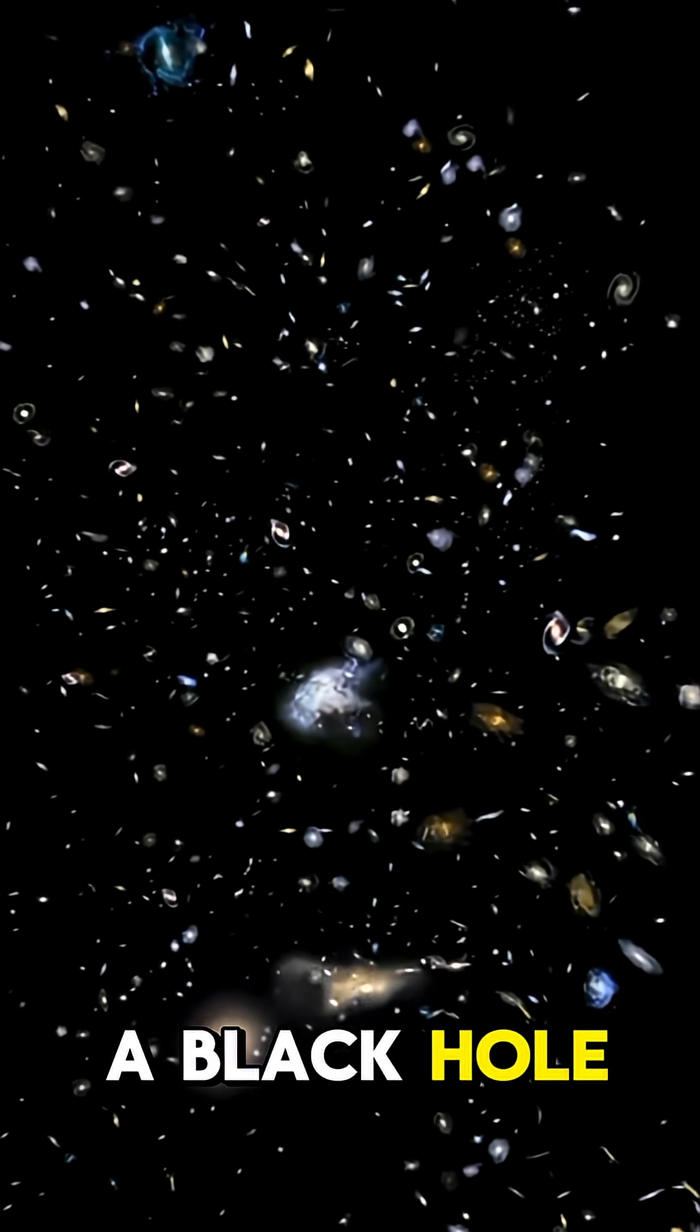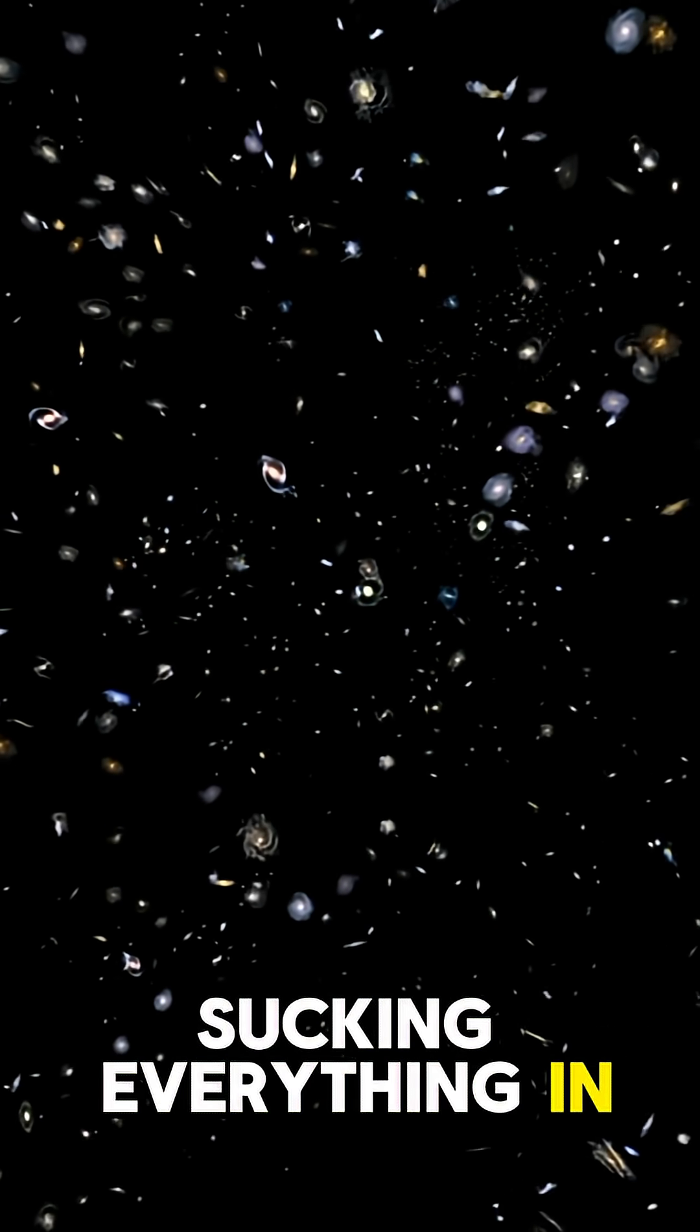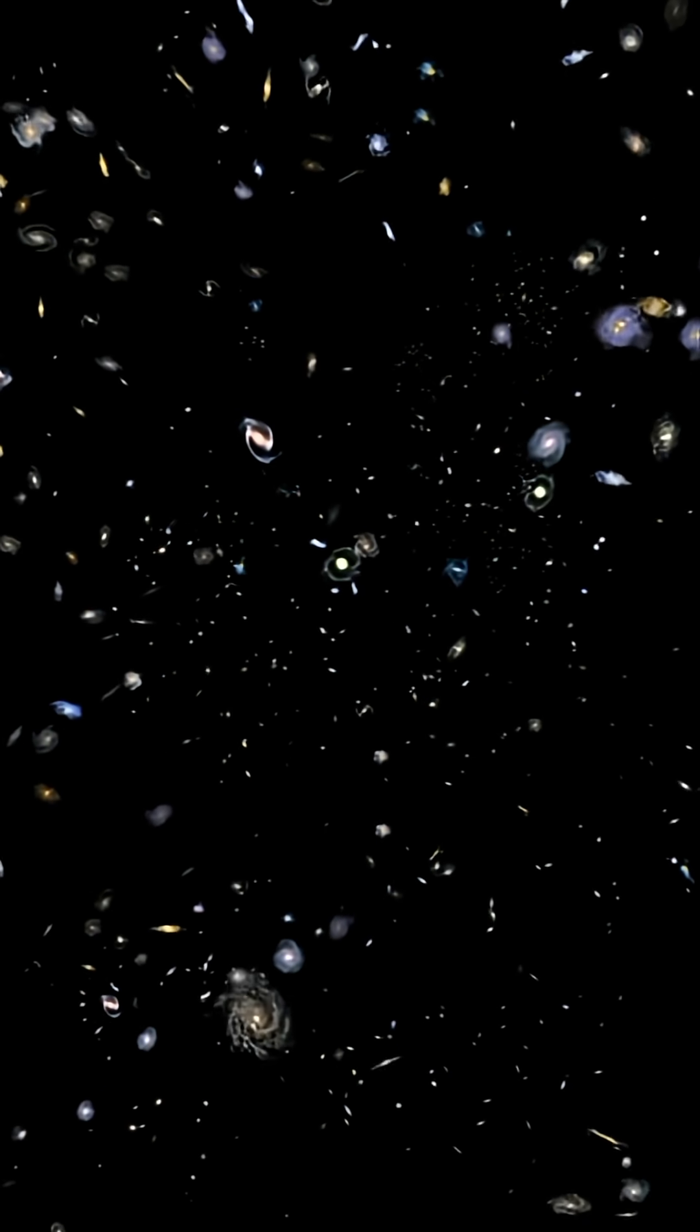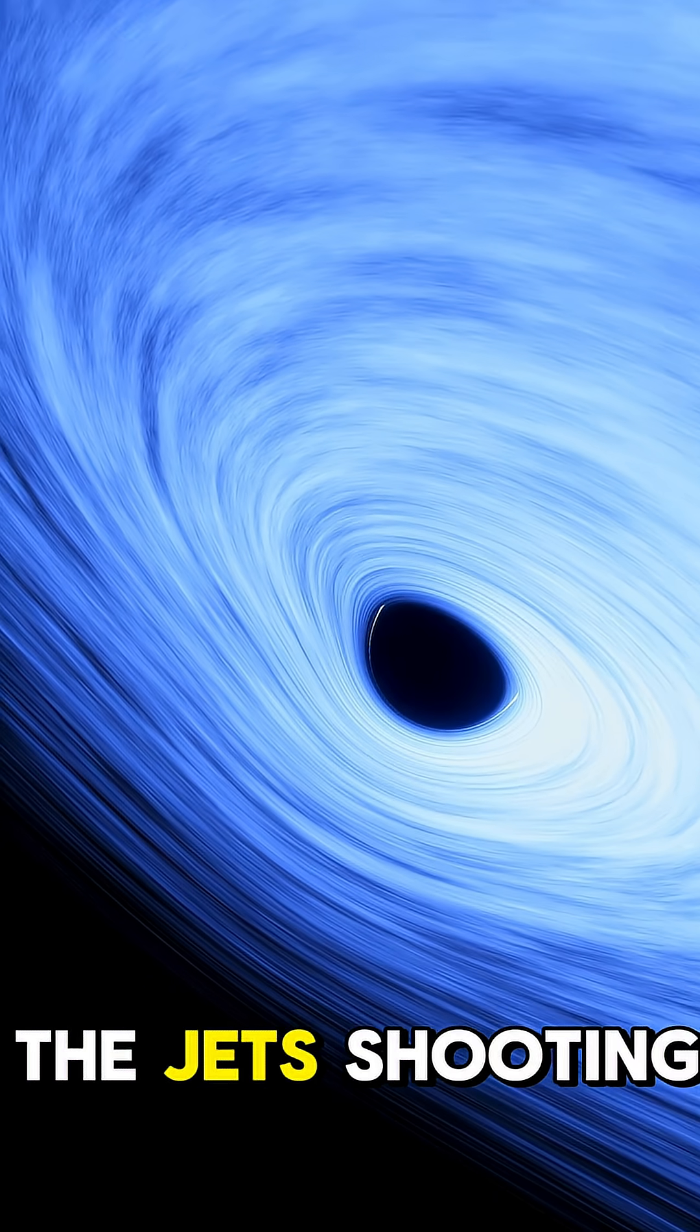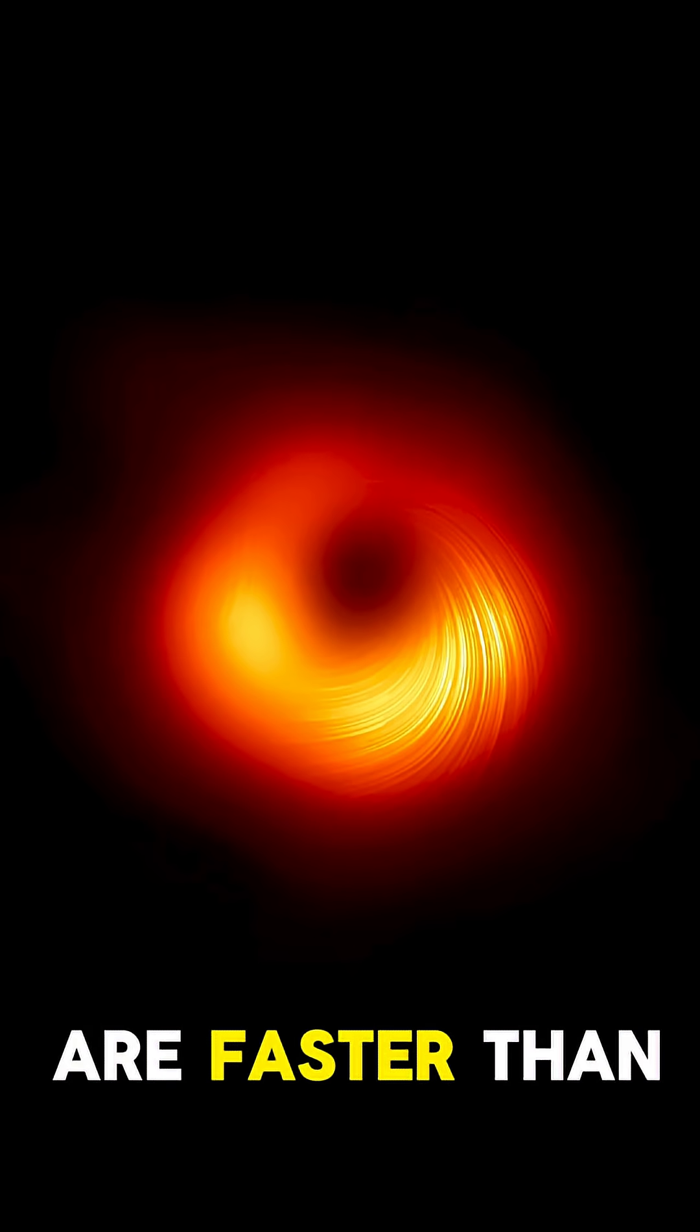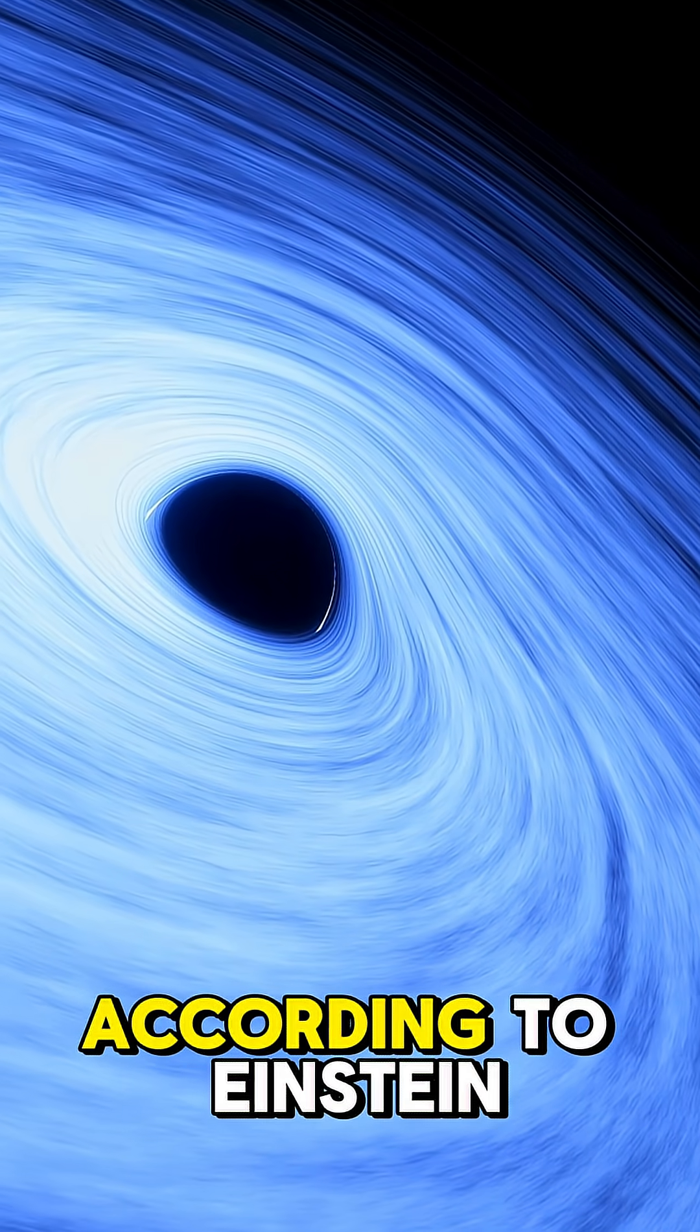Most people think a black hole is just a cosmic vacuum cleaner, sucking everything in and crushing it forever. But the truth about M87 star is far stranger. The jets shooting from its poles are faster than light appears to move, and that shouldn't even be possible according to Einstein.